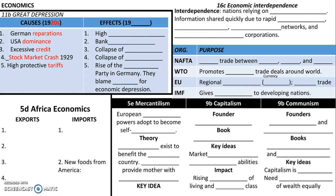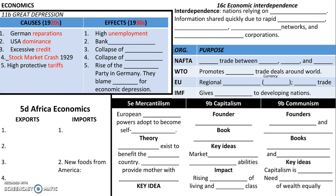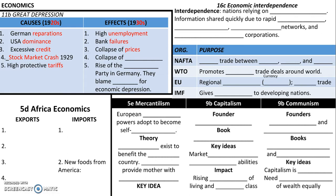So those are the causes. The effects happened in the 1930s. We have high unemployment — people were out of work in the United States, going as high as 25%. Because people weren't paying back their loans, banks failed. There were lots of bank failures, a collapse of prices on world trade because of the tariff war, and a collapse of credit because banks failed.